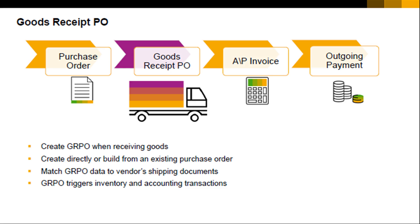Even if you copy all data from an existing PO, you can still adjust quantities and prices, as well as dates, vendor, and item information before you post the document.